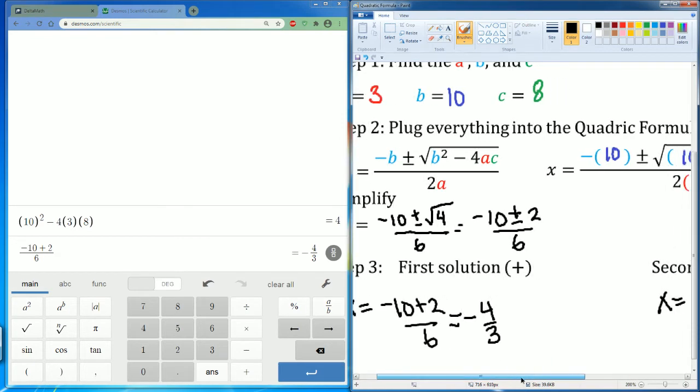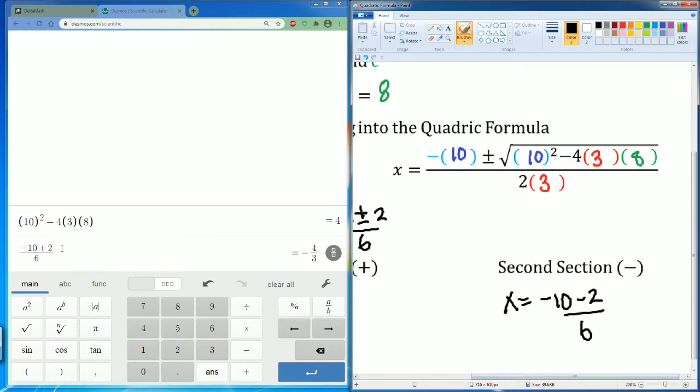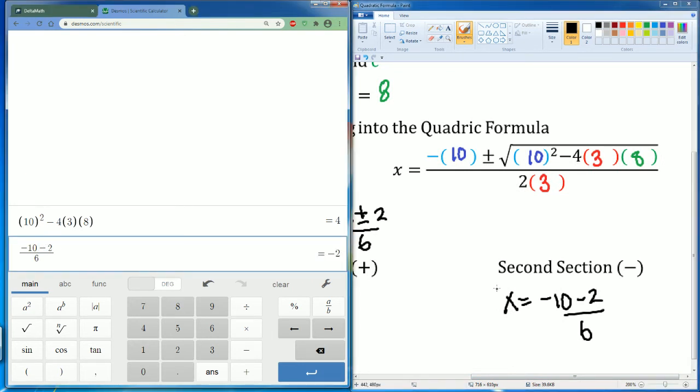And then this side, I'm just going to change this in Desmos to just become a negative. And I saw that this becomes negative 2. So these were my two solutions.